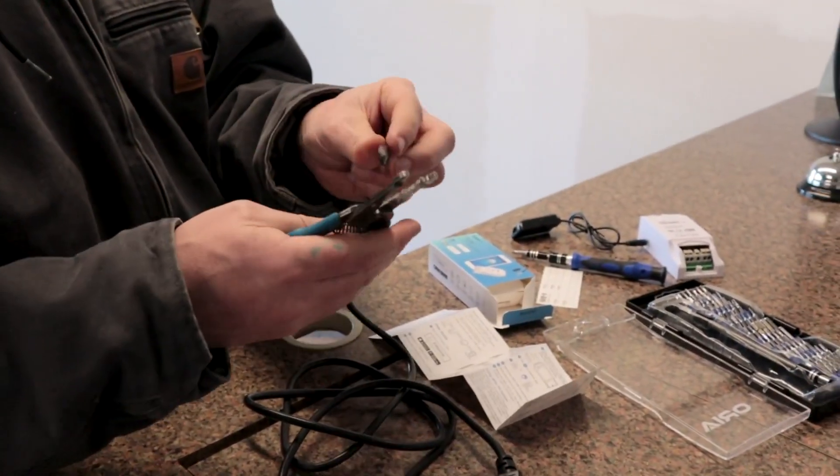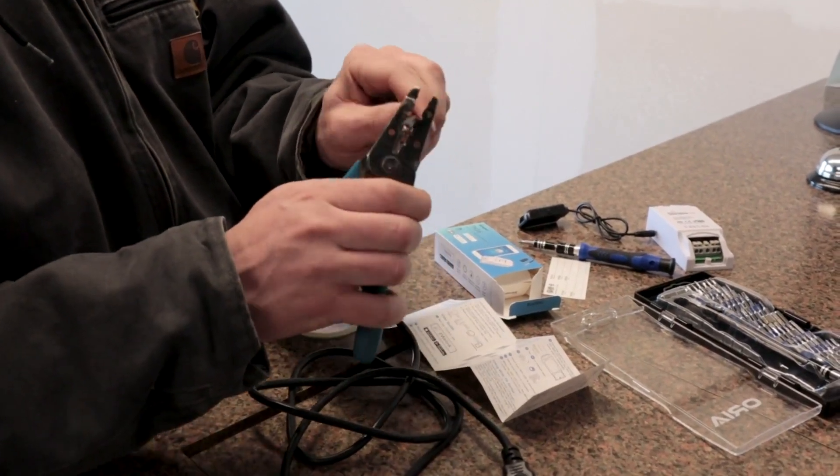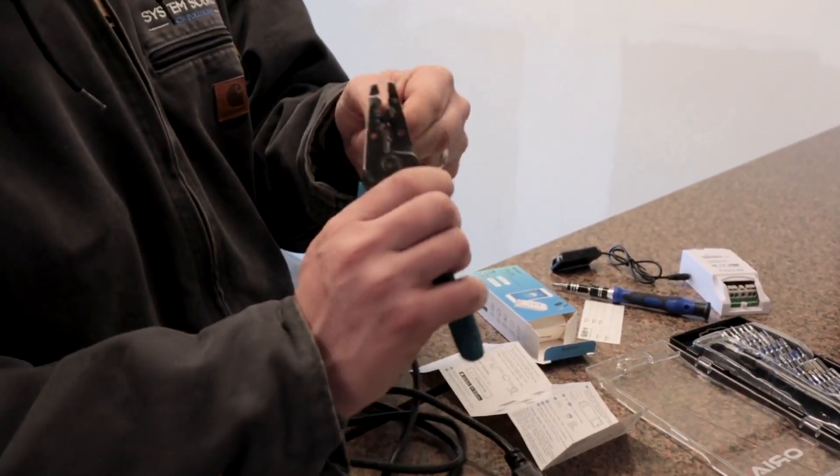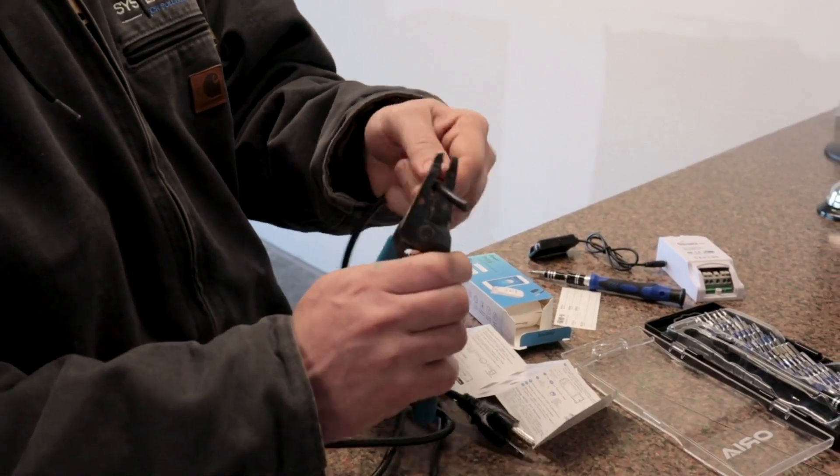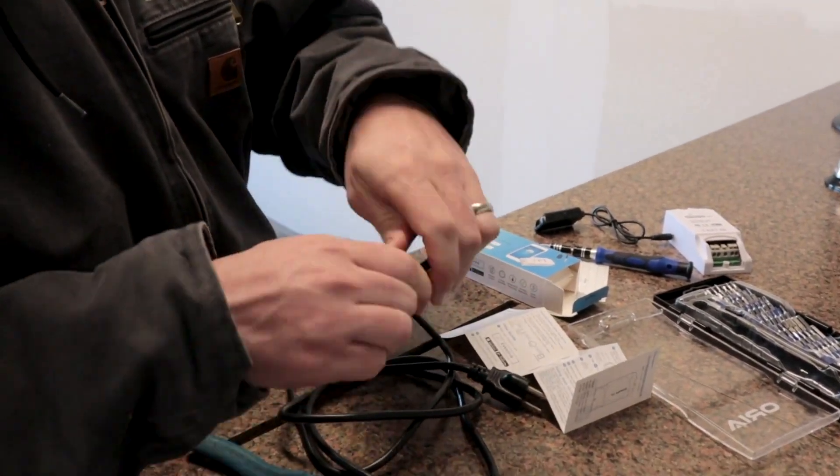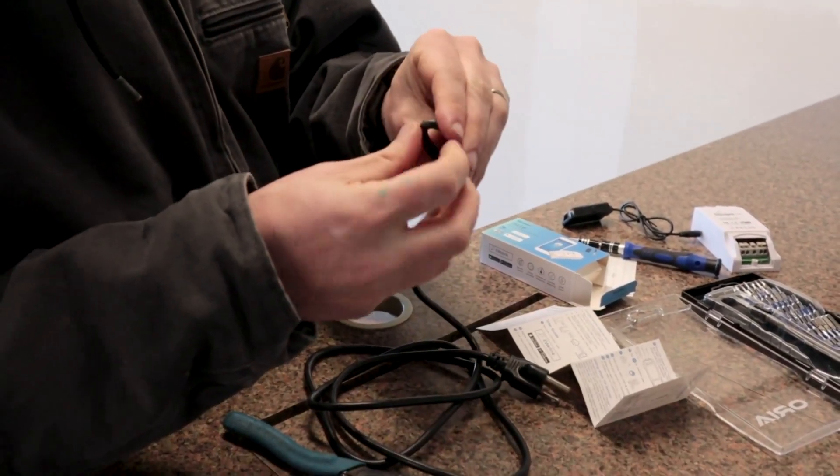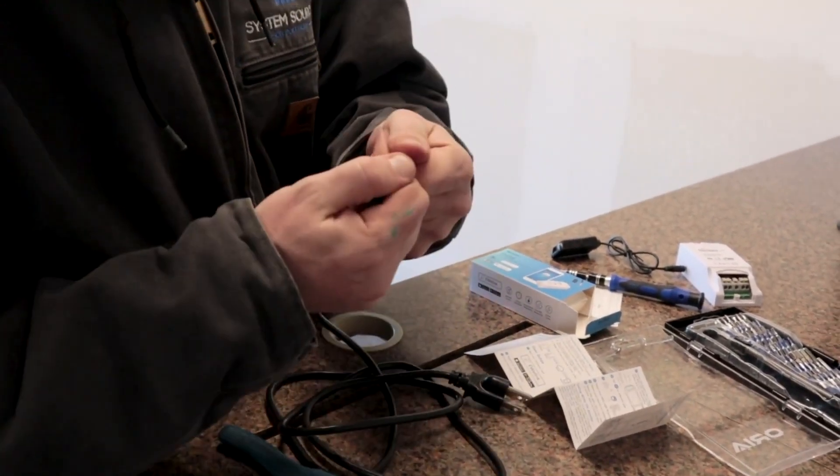And then you could strip this with a pair of like a razor blade. But I'm just going to do this. I have a little, this is a little Romex stripping stripper. But I'm just going to kind of score it a little bit here. Because what this has is an outside insulated jacket. And then each of the wires inside are individually insulated as well. So we'll take this rubber outside jacket off.